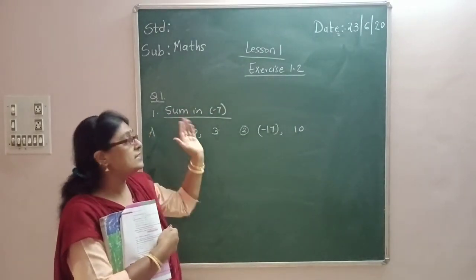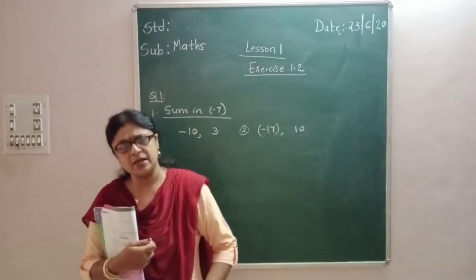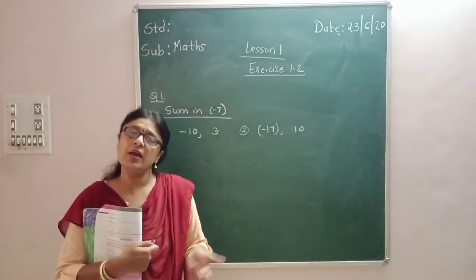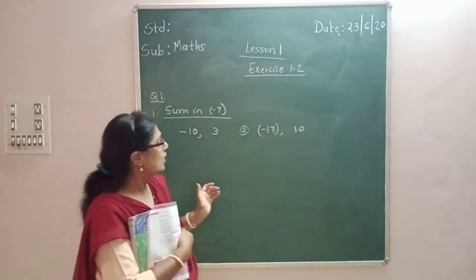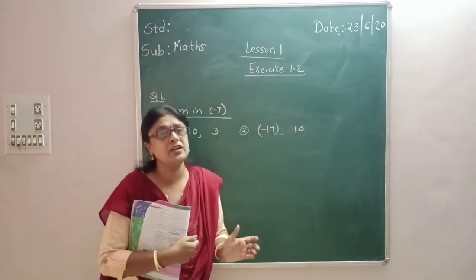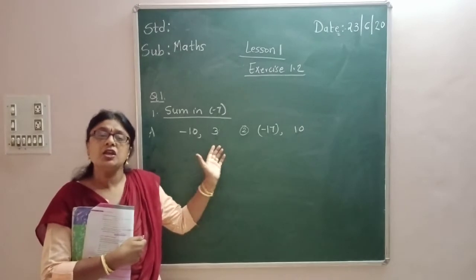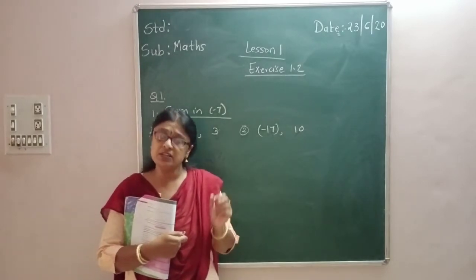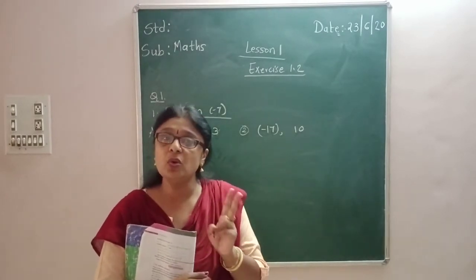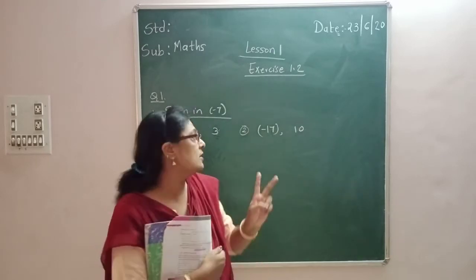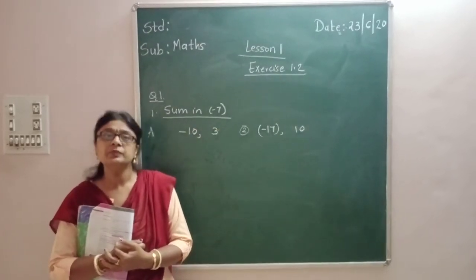Whenever such a situation is given, you can get many examples — you can write many examples. It is not necessary that you write minus 10 and 3 only. You can select any numbers, but just keep in mind that when you add those two integers your answer should be minus 7.